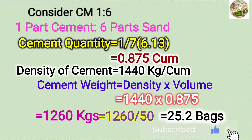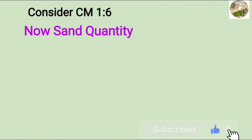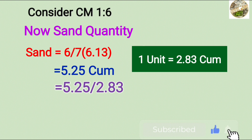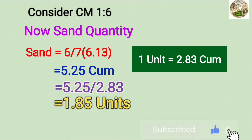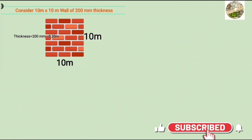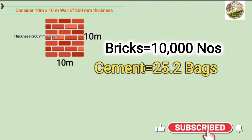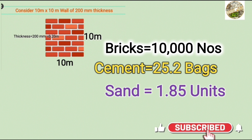The density of cement is 25.2 kg per cubic meter. Now the sand part is 6 by 7 into 6.13, giving 5.25 cubic meters. The unit is 5.25 divided by 2.83, which equals 1.85 units of sand. The unit is equal to 25.2, giving 1.85 units.